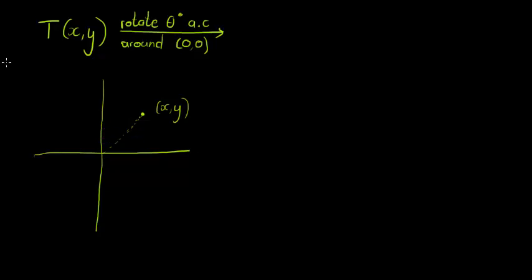Let's use a slightly different angle — go a bit more. That's definitely not 90 degrees. What we now do is connect this point again with the origin. Same distance R from the origin, and now this is my image point: x-accent, y-accent. So what would be the transformation rule — in other words, what should I do with x and y to get the values for x-accent and y-accent?